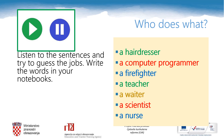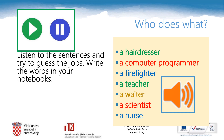Who does what? Tko što radi? Listen to the sentences and try to guess the jobs. Write down the word for a job that you hear into your notebooks. Let's check the words together — idemo zajedno provjeriti riječi: a hairdresser, a computer programmer, a firefighter, a teacher, a waiter, a scientist, a nurse. Listen carefully and write down the words in the order you hear them. Every time you have to copy something into your notebook, feel free to pause the video.